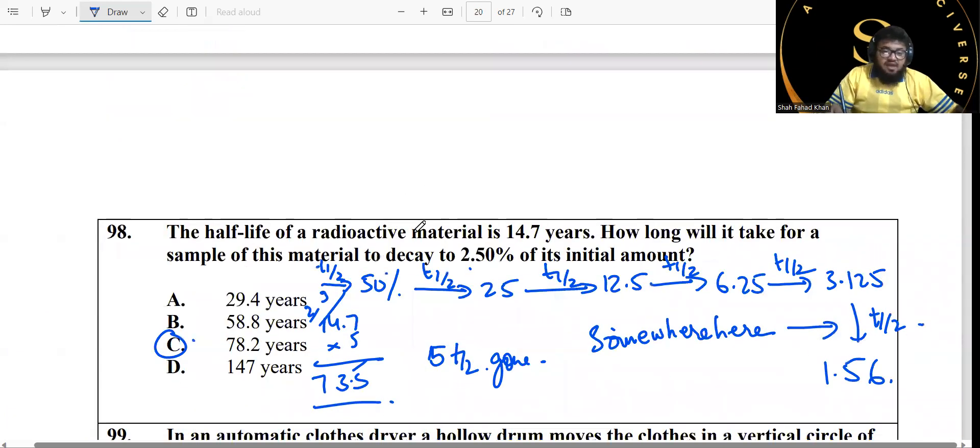Question 98: the half-life of a radioactive material is 14.7 years. How long will it take for a sample of this material to decrease to 2.5 percent of its initial value? Now let's look at all the different half-lives. After first half-life it's going to become 50, second 25, then 12.5, then 6.25, then 3.125, then finally 1.56.